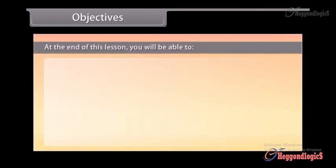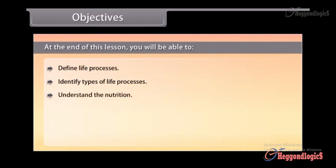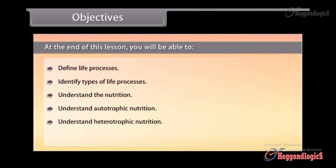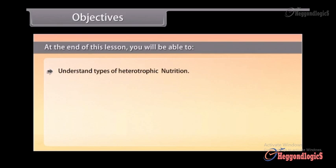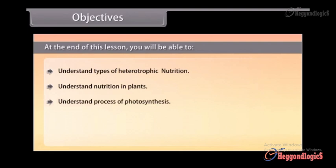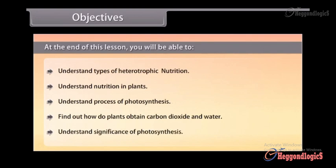Objectives. At the end of this lesson, you'll be able to define life processes, identify types of life processes, understand nutrition, understand autotrophic nutrition, understand heterotrophic nutrition, find the types of heterotrophic nutrition, understand types of heterotrophic nutrition, understand nutrition in plants, understand the process of photosynthesis, find out how plants obtain carbon dioxide and water, and understand the significance of photosynthesis.